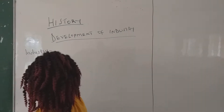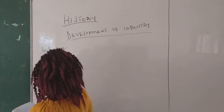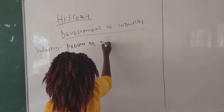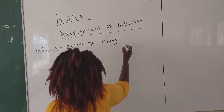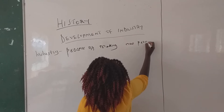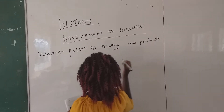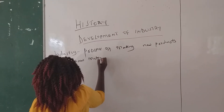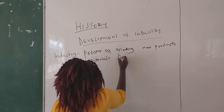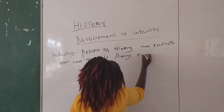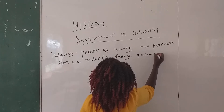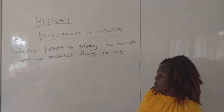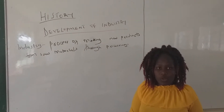Industry is the process of processing — it is the process of making new products from raw materials through processing. So that is the definition of the term industry: the word industry means the process of making new products from raw materials through processing.